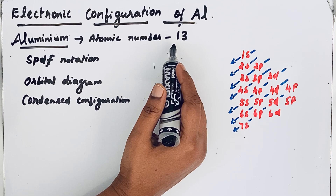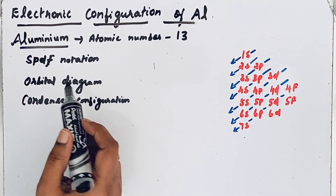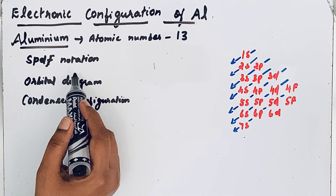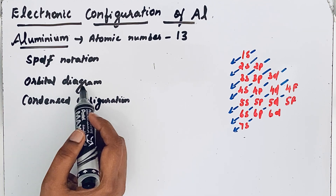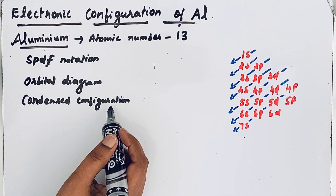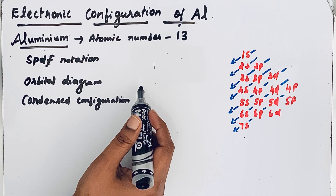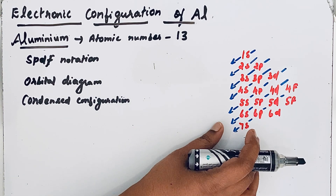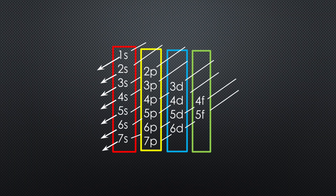Electronic configuration can be written in three forms: spdf notation, orbital diagram, and condensed configuration. To write electronic configuration we should know the order of filling orbitals.